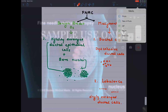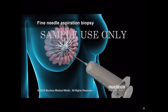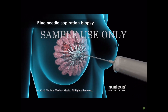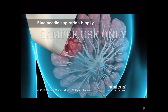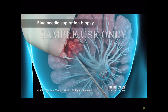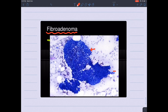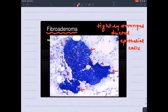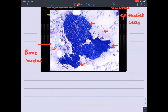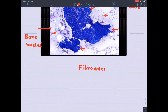During fine needle aspiration biopsy, your doctor will insert a needle into the breast, and some form of guidance such as an ultrasound probe will be used to direct the needle to the correct area. Fluid or a small sample of tissue will be removed. Here we are showing fibroadenoma, the most common benign tumor of the breast. You can appreciate the tightly arranged cluster of epithelial cells — no space in between. Also appreciate the small bare nuclei in the background. These two features in combination are suggestive of benign breast disease.